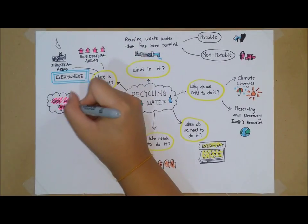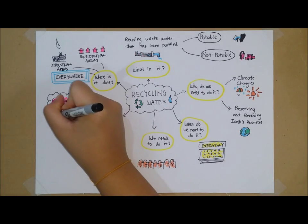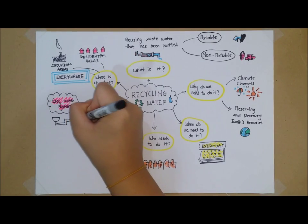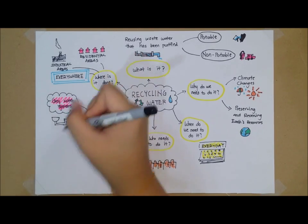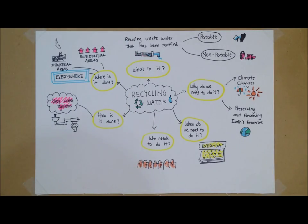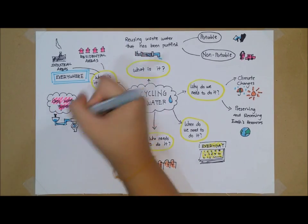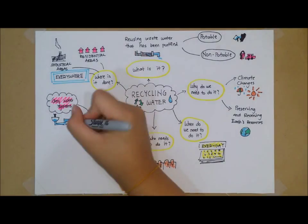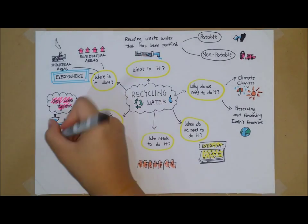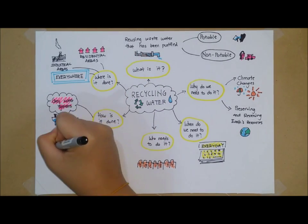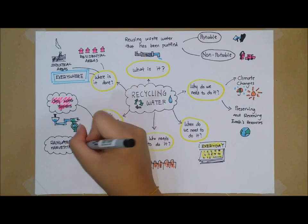There are many methods of recycling water. One of them is grey water systems. Grey water is non-toilet household water. There are now systems which can be installed in homes which directly transfer the grey water from the sink to flush a toilet.